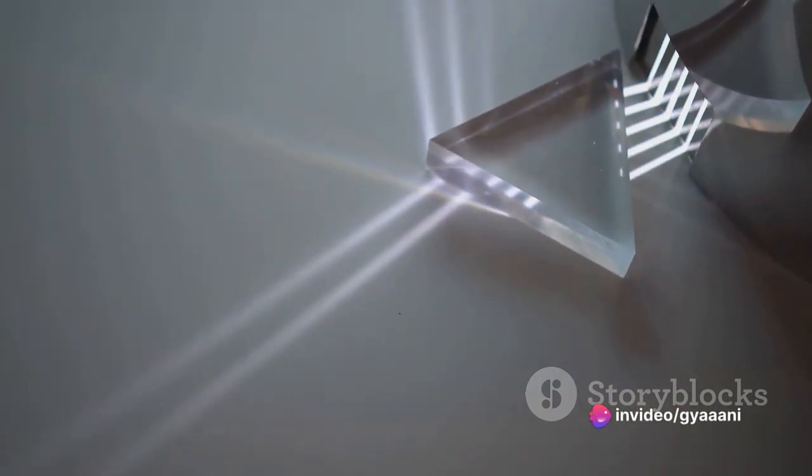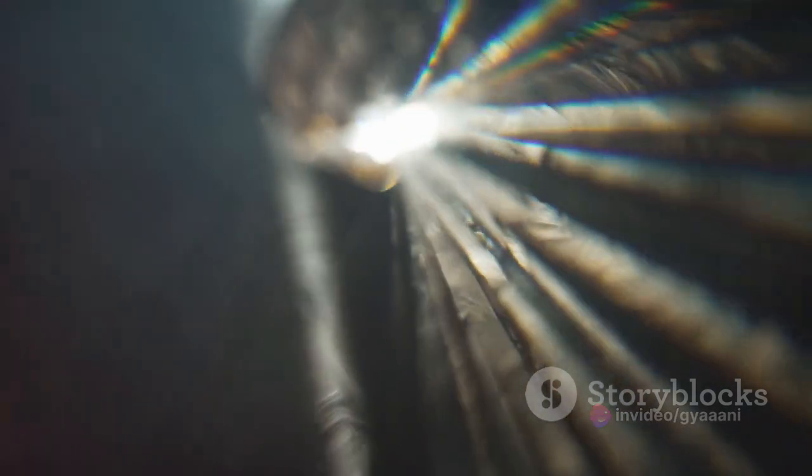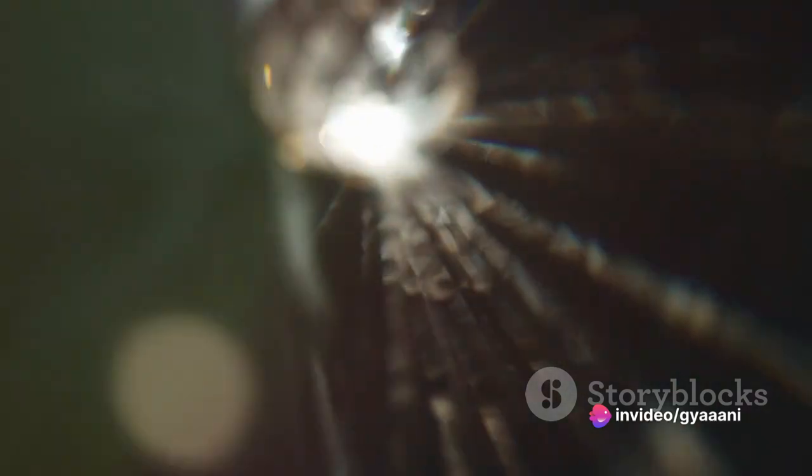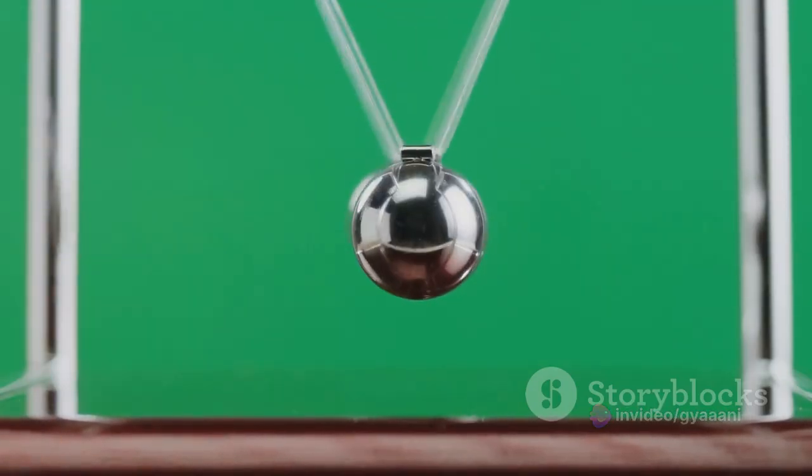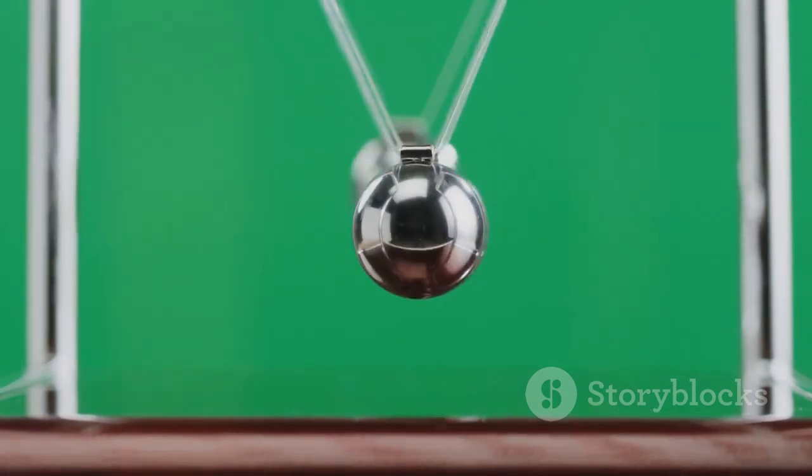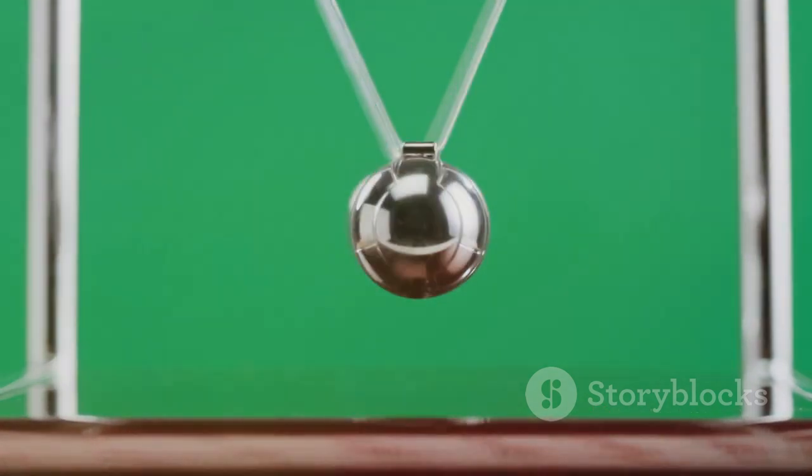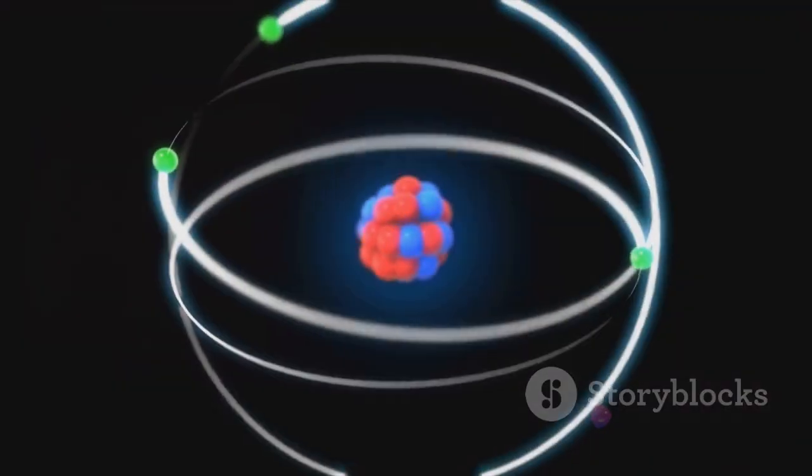This particular experiment provides compelling evidence where light behaves as an indisputable particle, not a wave. When a beam of light shines on a metal surface, a fascinating thing happens. Electrons are ejected from that surface. It's similar to observing balls being forcefully knocked off a billiard table by a potent cue strike. This entire phenomenon is known as the photoelectric effect.